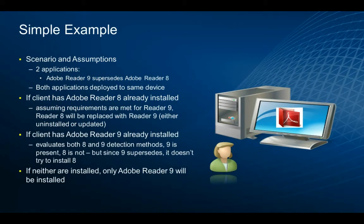Here's a simple example with two applications: Adobe Reader versions 8 and 9. Adobe 9 is the superseding version over Adobe 8, but both are deployed to the same device. If the client has Reader 8 installed and Reader 9's requisites are met, version 8 will be replaced with version 9 — either by uninstallation or an update. If Reader 9 is already installed, the model evaluates both detection methods, and since 9 supersedes, it doesn't attempt to install version 8. If neither is installed, only Reader 9 will be installed as the most current registered version.